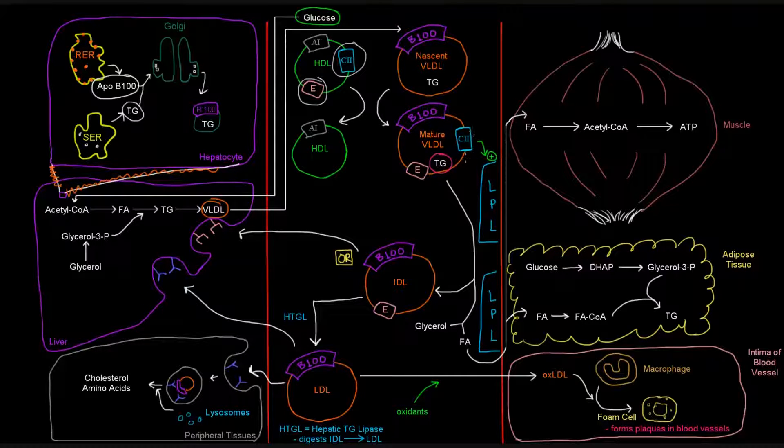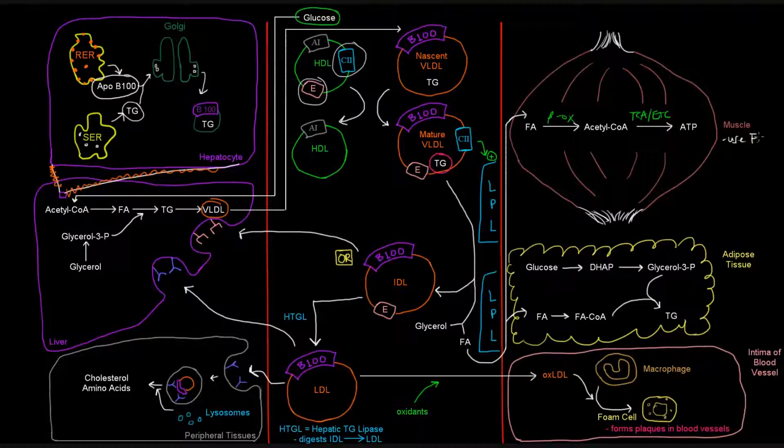So just like when chylomicrons sent triglycerides to the muscle and the adipose tissue, the same thing happens. We can have beta-oxidation occur here, and then the TCA cycle followed by the electron transport chain in the muscle to give us ATP, where the muscle is going to use the triglycerides, or specifically the fatty acids that come from the triglycerides for energy. How did we get those fatty acids to begin with? APO-C2 activated LPL, which is lipoprotein lipase, that cleave these triglycerides into both the glycerol and the fatty acids.